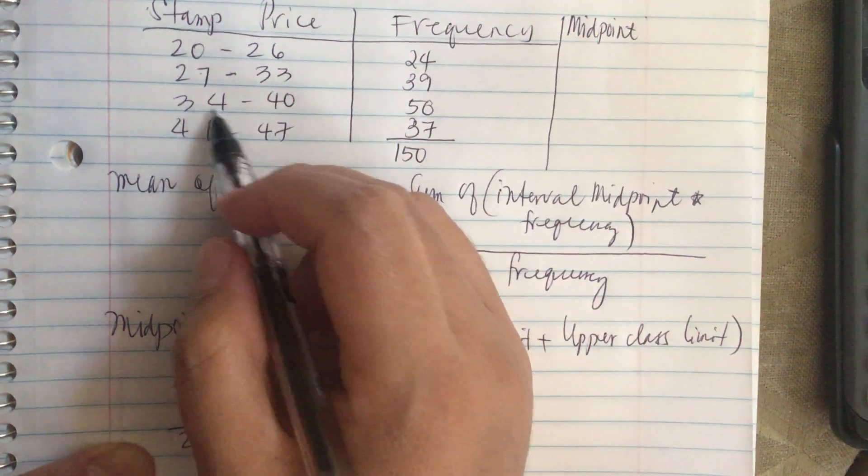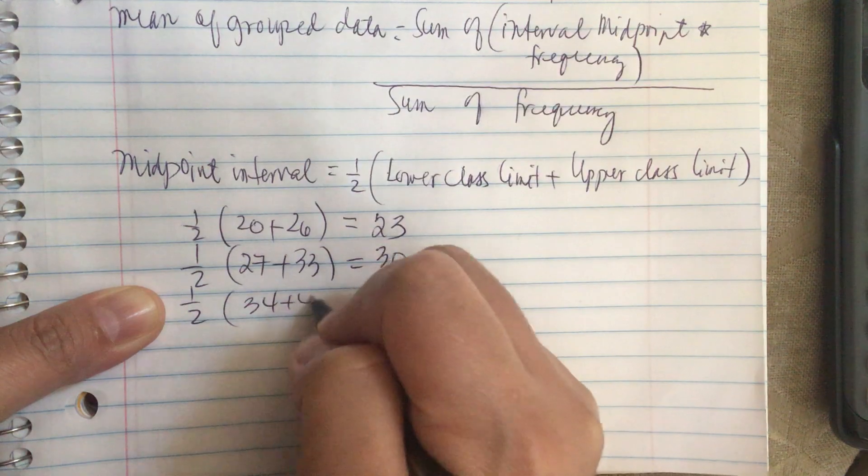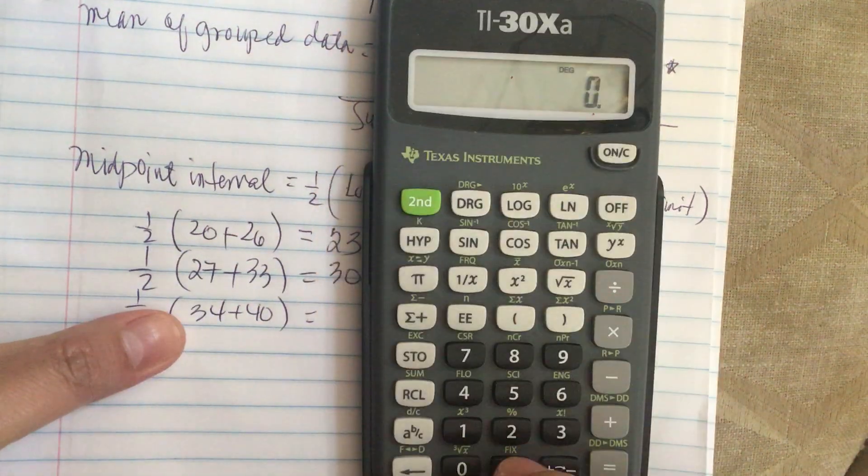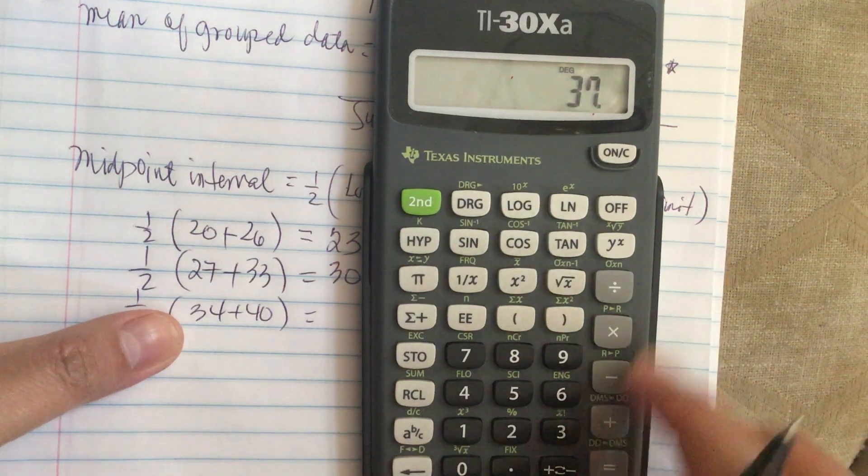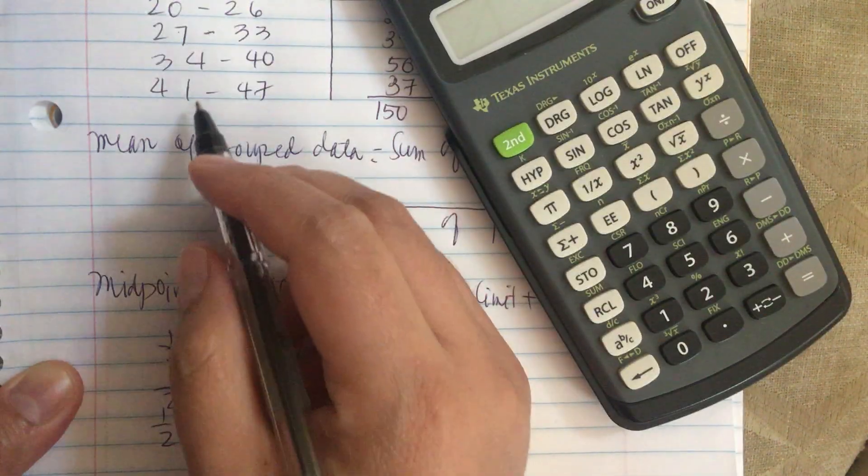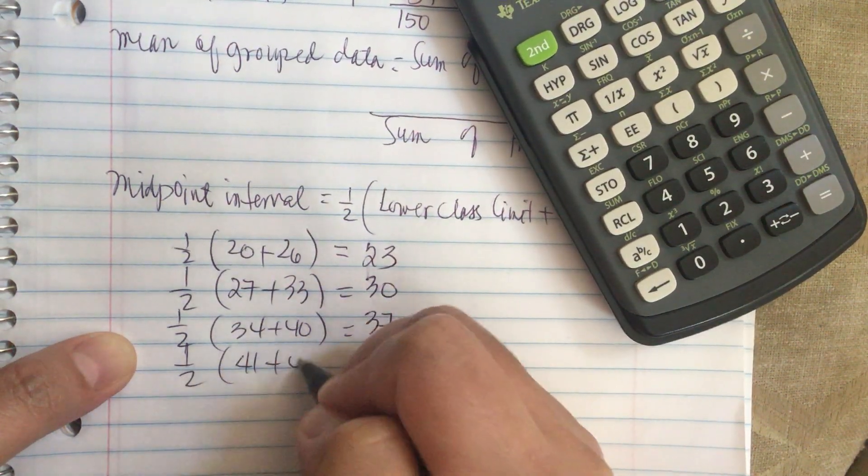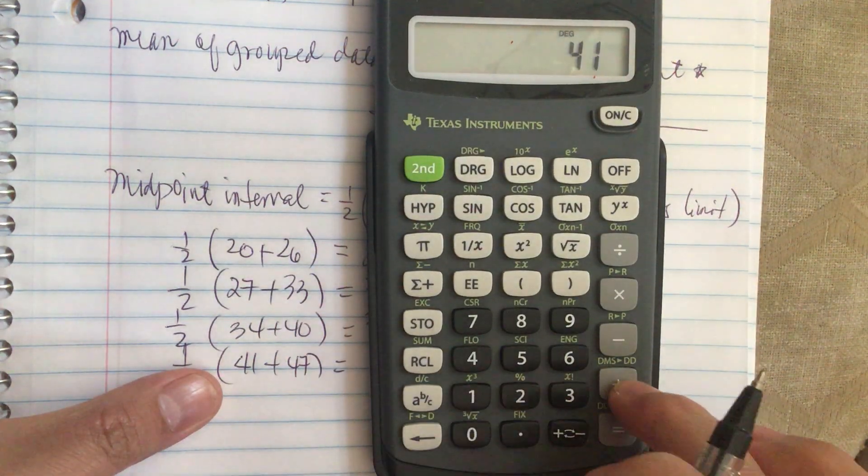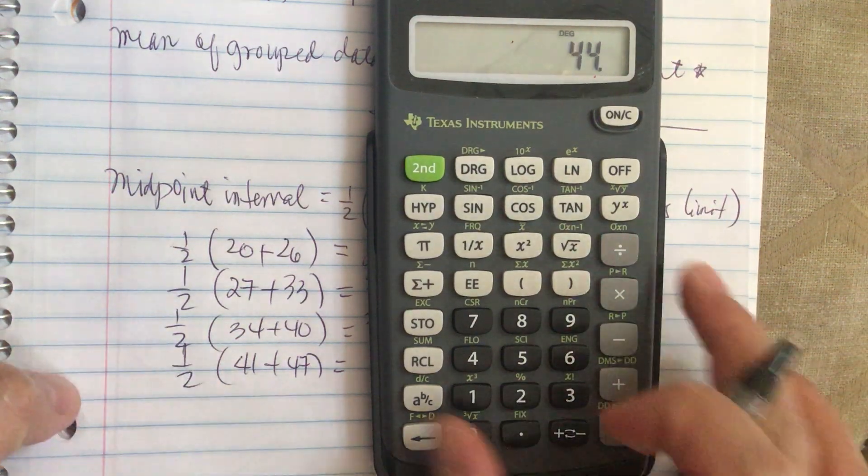Now the next one, 34 plus 40 divided by 2 is equal to 37. Now the last one is 41 to 47, so 41 plus 47 divided by 2 is equal to 44.